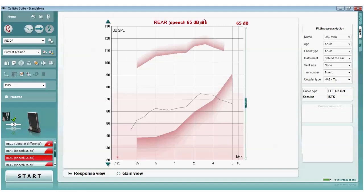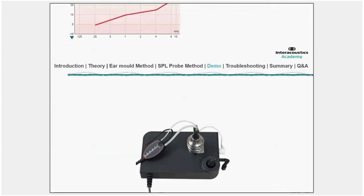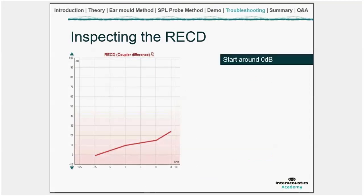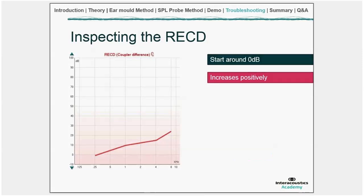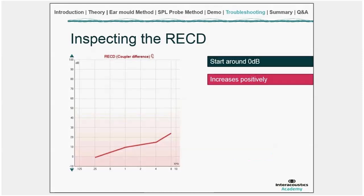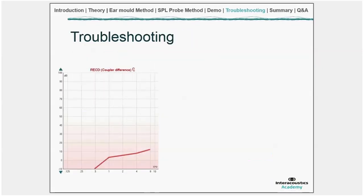A normal RECD should start around 0 dB and increase positively as frequency increases. When it doesn't look like this, you need to ask whether there's a problem with the measurement technique or whether the ear itself is causing it. The first abnormal example shows the RECD starting well below minus 10 dB — a low-frequency dip. This could be caused by one of four things: a tympanic membrane perforation, a poorly inserted ear mould or tympanometry tip allowing sound to leak out.